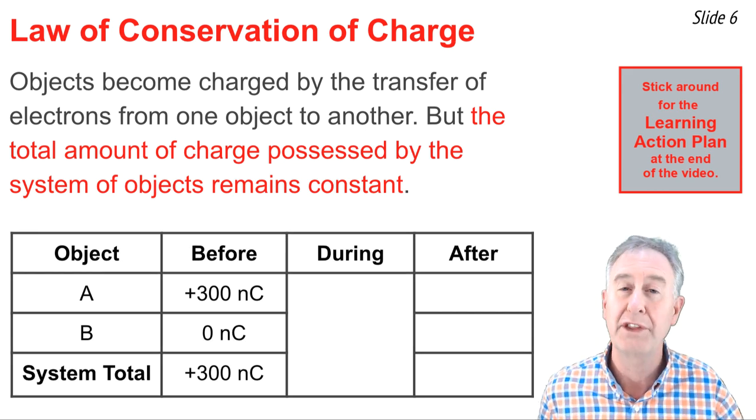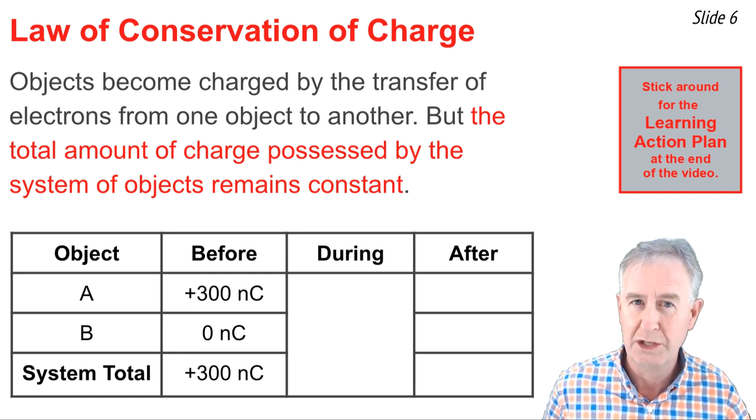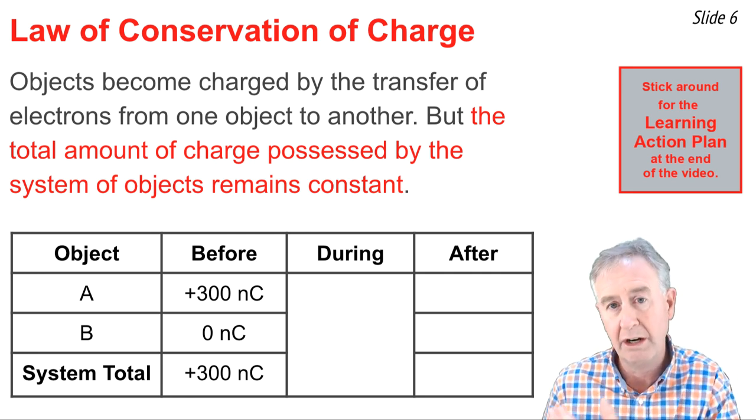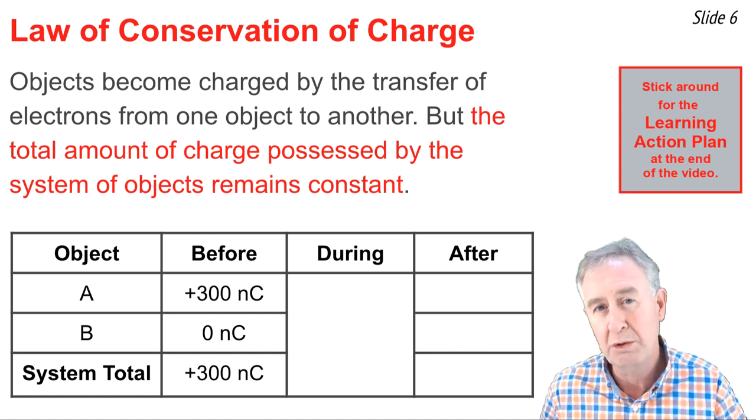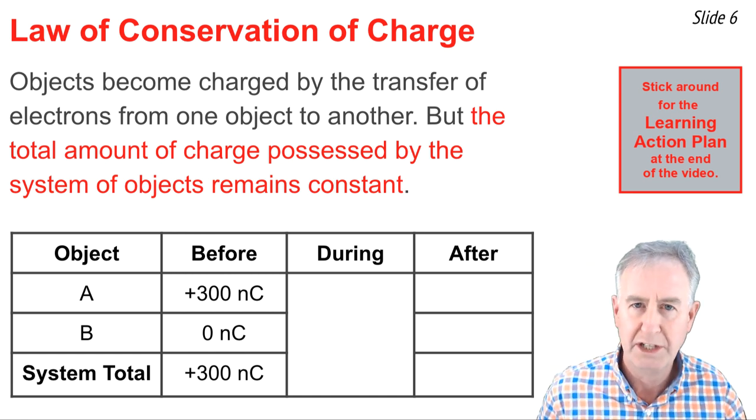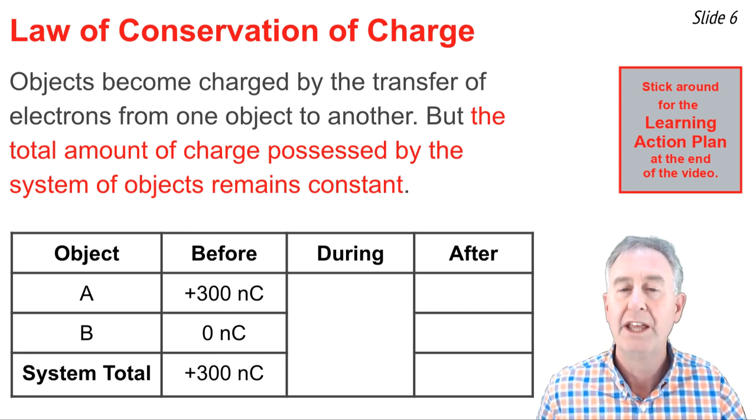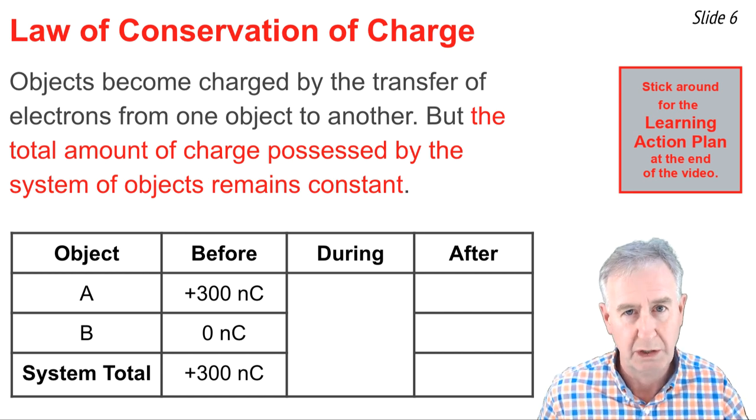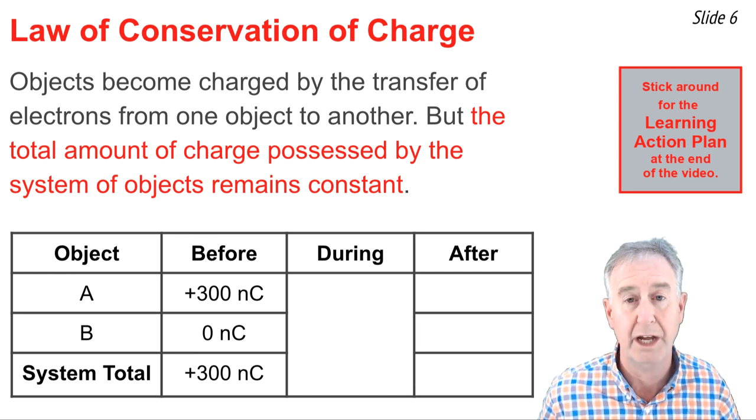To illustrate this, let's consider that last example we discussed, where you charge by conduction a neutral object using a positive object. So here's a table, and we see columns of before, during, and after, and rows of object A, the positive object, object B, the neutral object, and then in the bottom row is the system total. So before the actual process begins, object A has 300 units of charge, positive 300, the unit there is nanocoulombs, we'll just refer to it as unit. And object B is neutral, so zero. And the system total is positive 300 units of charge for the two objects combined.